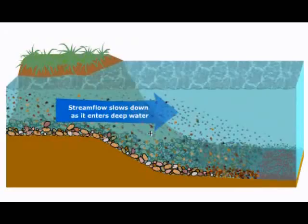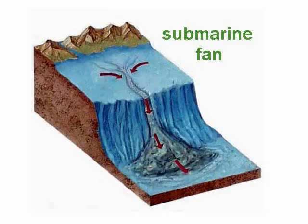As we described earlier, weathering and erosion cause sediment to be transported to the oceans. There, at places, this sediment builds up at the ocean's edge where it creates a continental shelf. Eventually, the weight of this sediment shifts, causing landslides that form submarine fans. Finer sediments are found on the outer fan edge.